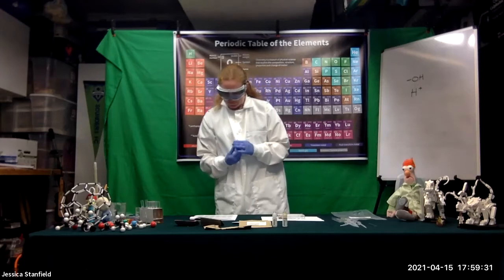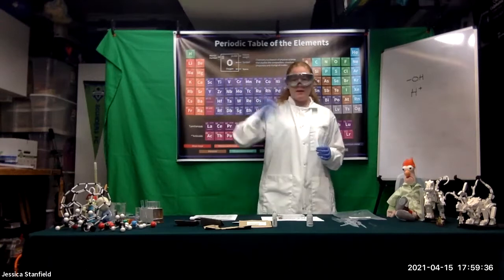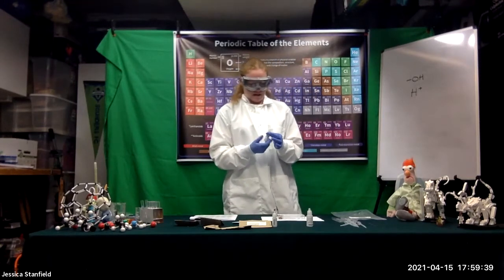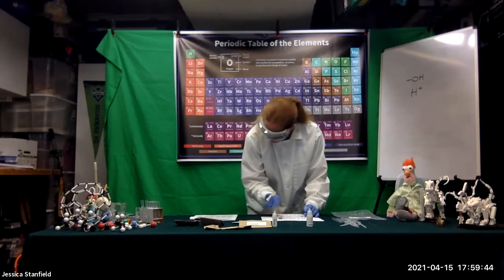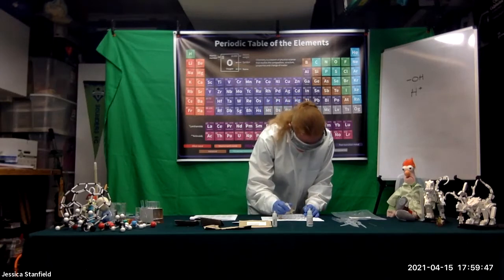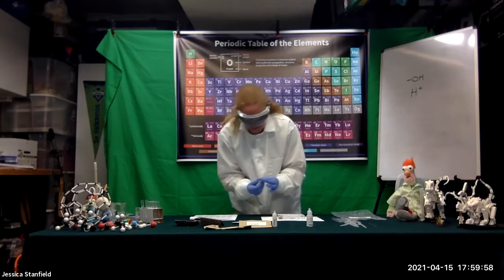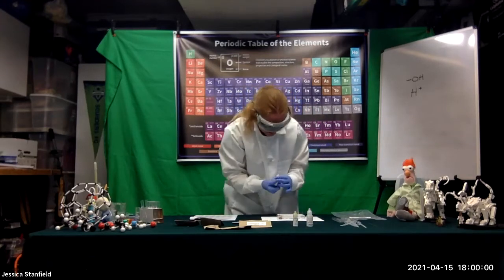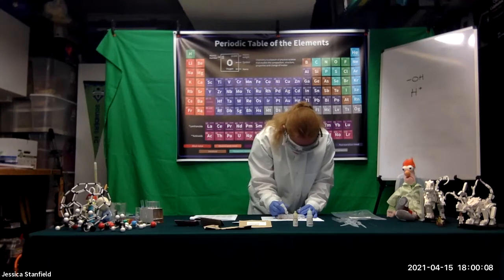Next, in well B3 I'm going to add 10 drops of the iron three chloride. We want to shake this bottle because it may be a little saturated and there might be some solid material in there. Then in well B4, I'm going to add 10 drops of the acetic acid.